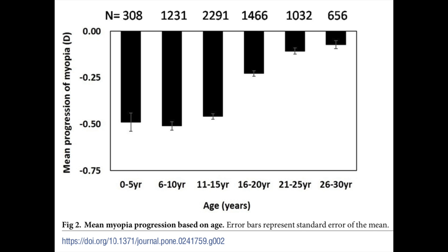This is a huge retrospective study that looks at the progression of myopia in almost 7,000 kids in India. I want you to take a look at this graph. It compares the progression of myopia based on age, and what I want you to look at is the difference between the first three columns and the last three columns. The first three columns tell us that the normal progression under age 15 is less than half a diopter a year, and the normal progression of myopia if you are over age 15 is less than a quarter diopter.